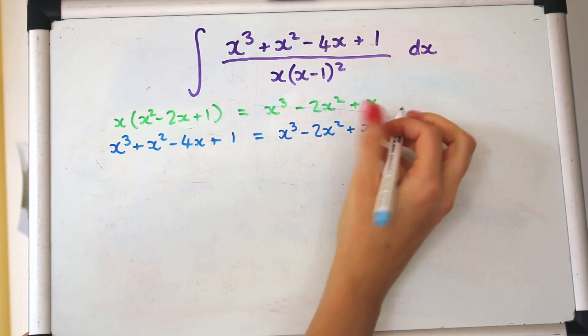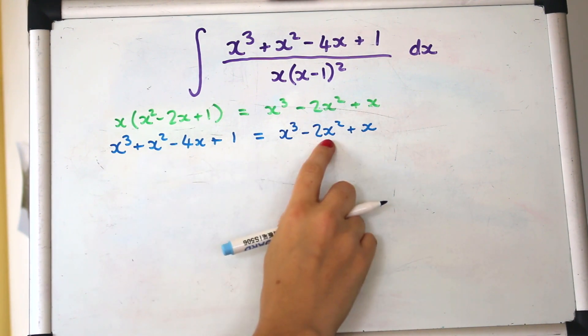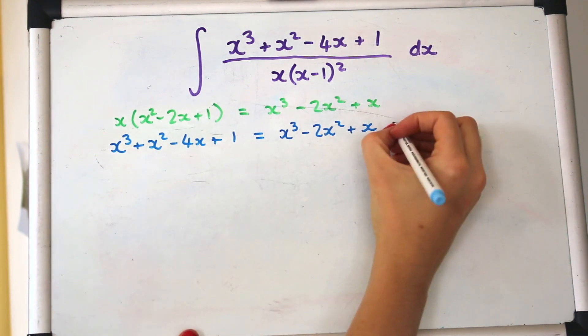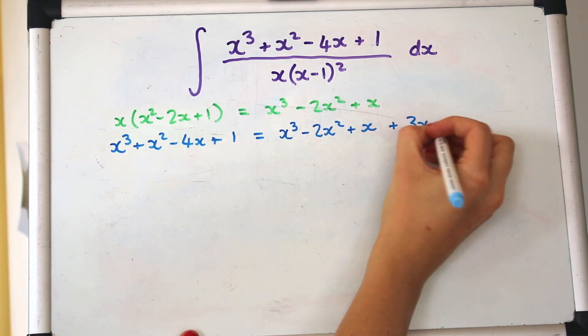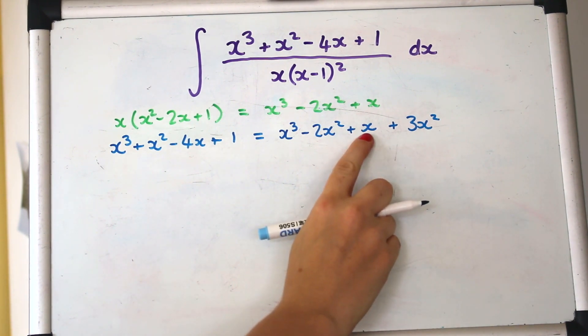So we're gonna have one lot of that but then we need to adjust. We've got x cubed which agrees that's great but we don't have minus 2x squared what we want is plus 1x squared so we need to plus another 3x squared to make that right.